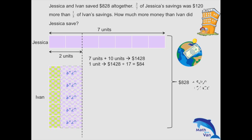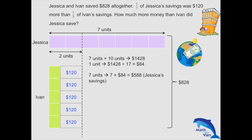Bear in mind that Ivan was never 10 units, so we revert to the actual state. Jessica is still 7 units, so Jessica's savings would be 7 times $84, which is $588. Since we have the total of $828, we take away Jessica's savings to get $240, which is Ivan's savings. The difference then is $588 minus $240, which is $348.